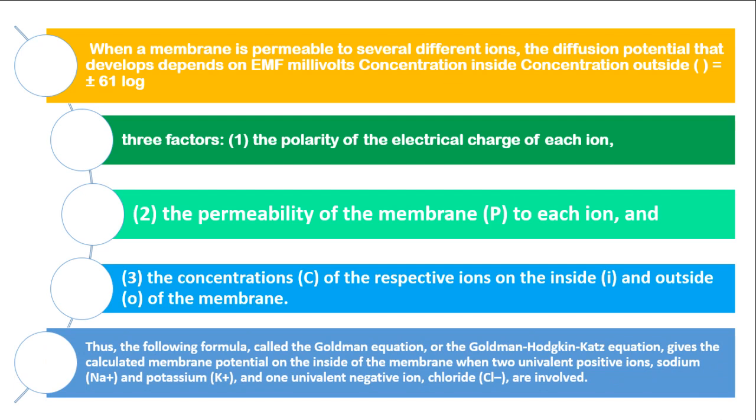Therefore, the following formula called the Goldman equation, or the Goldman-Hodgkin-Katz equation, gives the calculated membrane potential on the inside of the membrane when two univalent positive ions, such as sodium and potassium, and one univalent negative ion, like chloride ions, are involved.